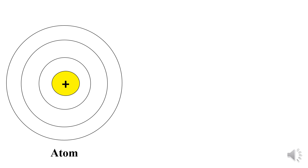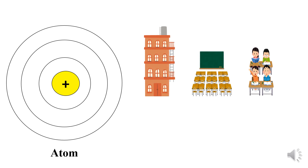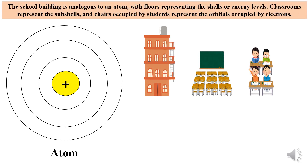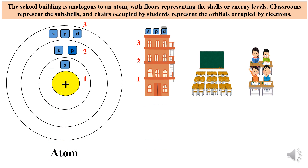Here is an interesting analogy comparing the atomic structure to that of a school building. The school building is analogous to an atom, with the floors of the building representing the shells or energy levels of the atom. Classrooms of the building represent the subshells, and the chairs represent the orbitals.